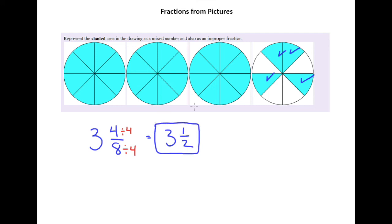Finally, it did ask us to write the improper fraction as well. Remember the strategy for that is to multiply the whole part and the denominator — three times two is six — and then we add whatever the numerator is. So three times two is six, plus one is seven, and then we put that all over the denominator, giving us seven halves.